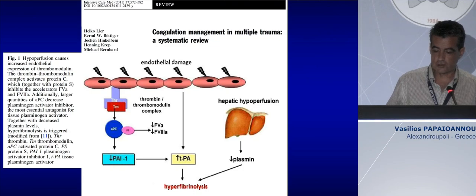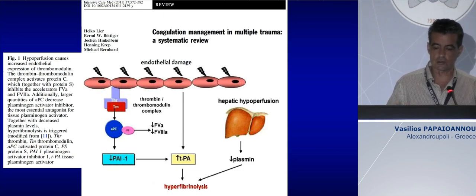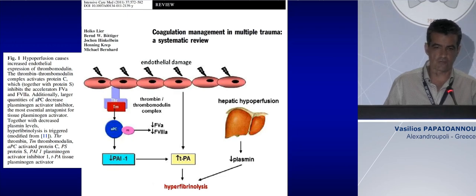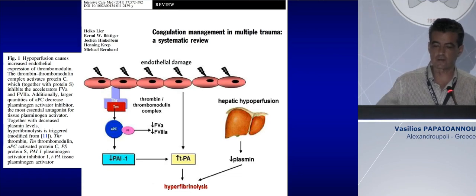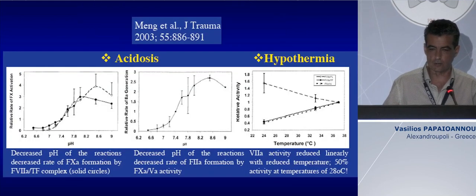Endothelial damage attributed to tissue hypoxia and hypoperfusion can increase the expression of thrombomodulin at the level of endothelial cells, which in association with thrombin will activate protein C. Protein C with protein S will decrease the activity of factor V and VIII, and will decrease the level of PAI — plasminogen activator inhibitor — which is the most essential antagonist of tPA. In association with reduced hepatic perfusion, reduced production of plasmin will induce hyperfibrinolysis, which is the major coagulation disorder.